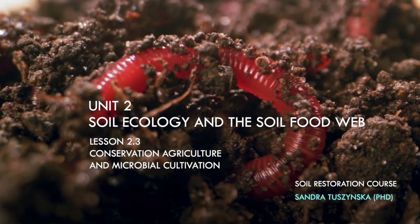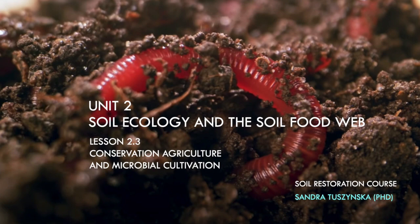We've come to the end of lesson 2.2. In our next lesson, we'll look at the concept of conservation agriculture and give examples of how this type of agriculture — which focuses on ecosystem services and providing conditions for biological systems to thrive in the soil — actually impacts production. We'll also look at how to cultivate microbial populations and soil food web organisms, and how we can add soil food web organisms back into the soil. You'll be hearing from me in lesson 2.3.